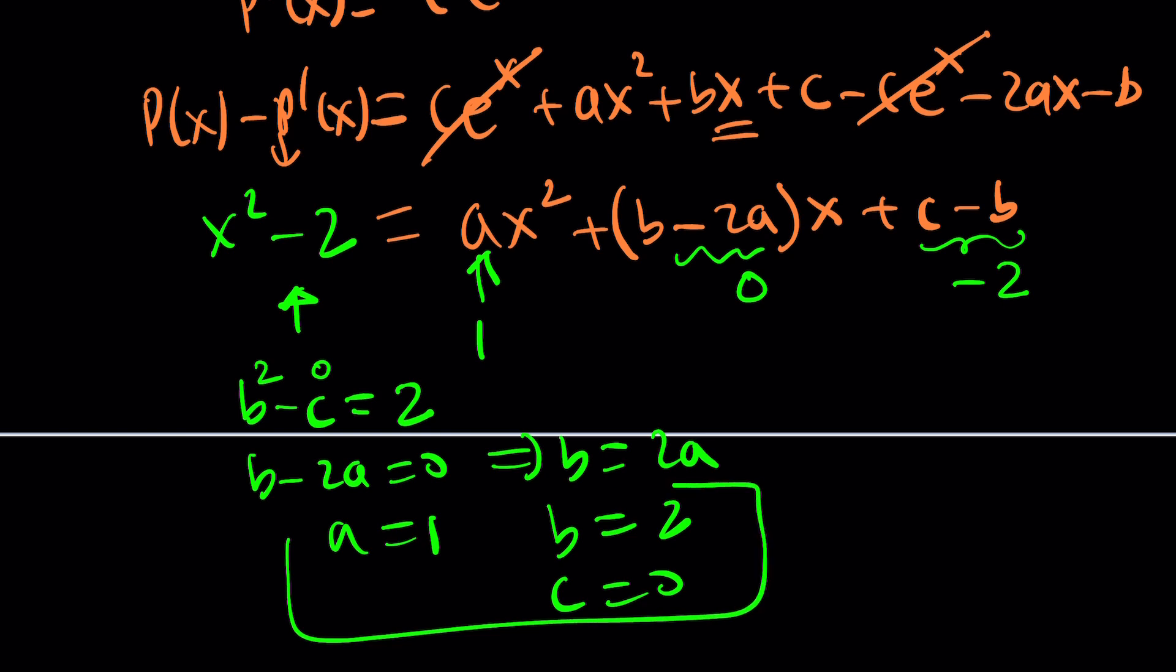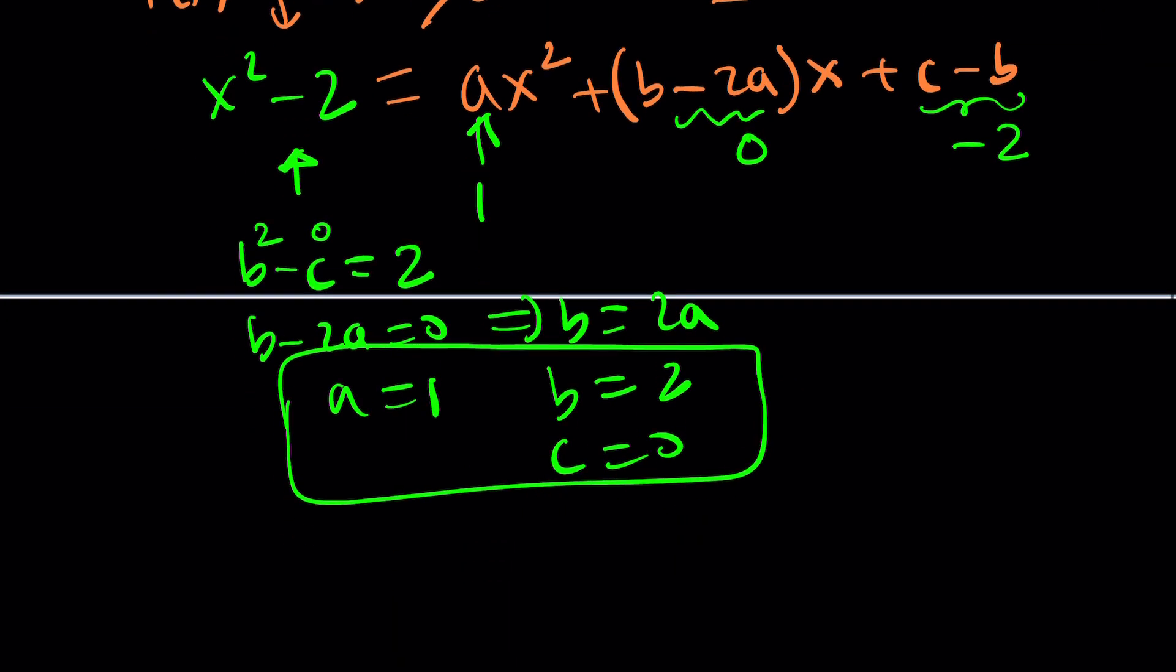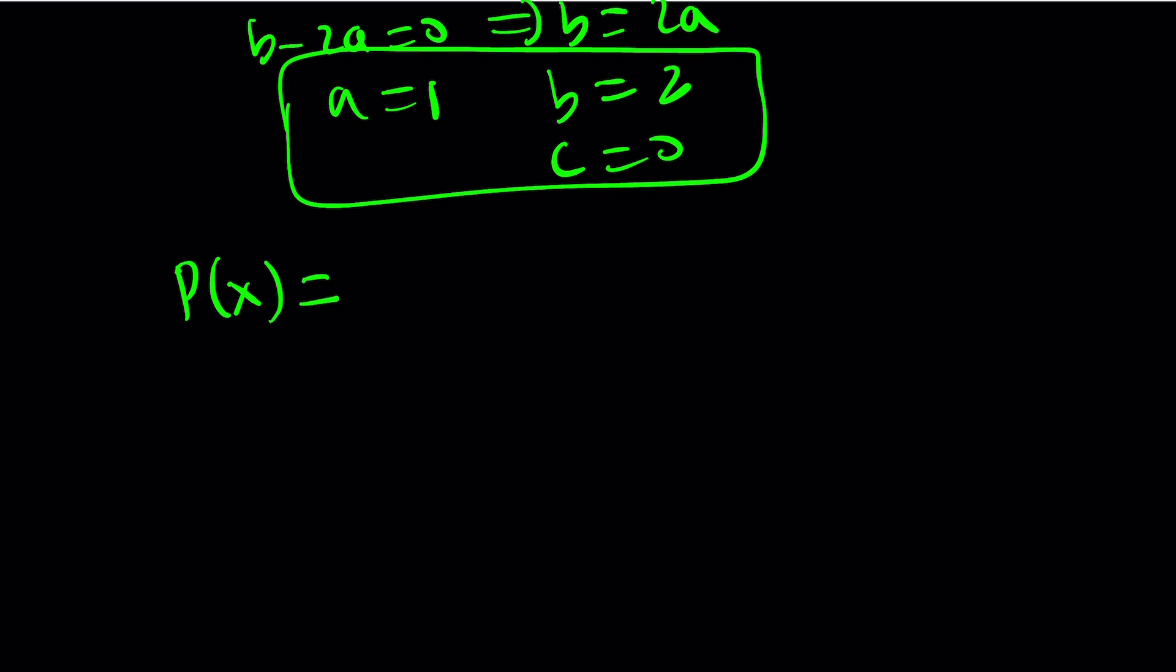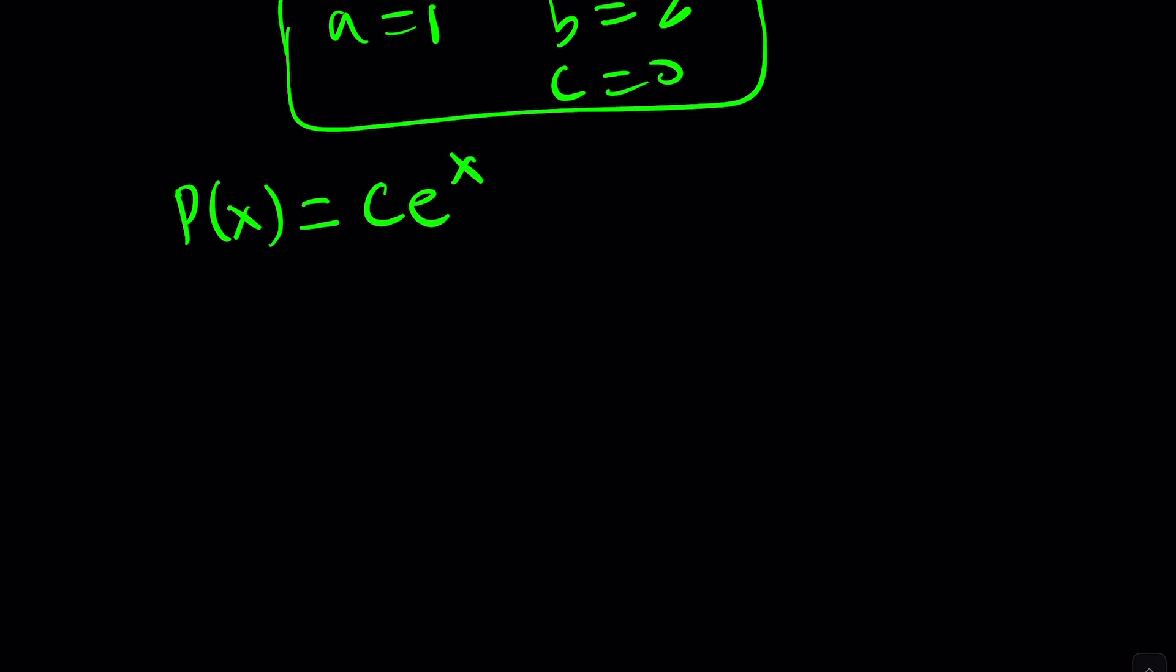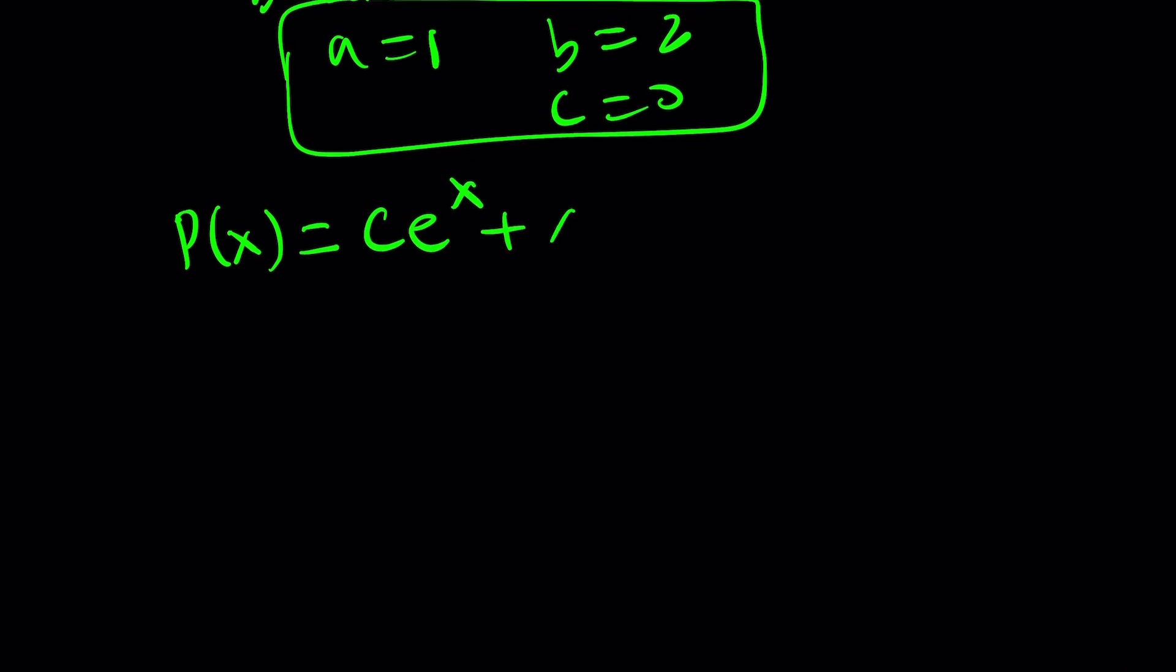So we got a, b, c. It's as easy as the alphabet. Now how did we write P of x? Well, we just assumed a form like this. So we're going to write it now as c e to the x, by the way c is an arbitrary constant, it could even be 0, plus ax squared plus bx plus c which is 0. So P of x will be a solution and you can check that. Differentiate it, subtract it from P of x, you should get x squared minus 2. If you don't, come back and let us know. I'm guaranteed that you'll find it.